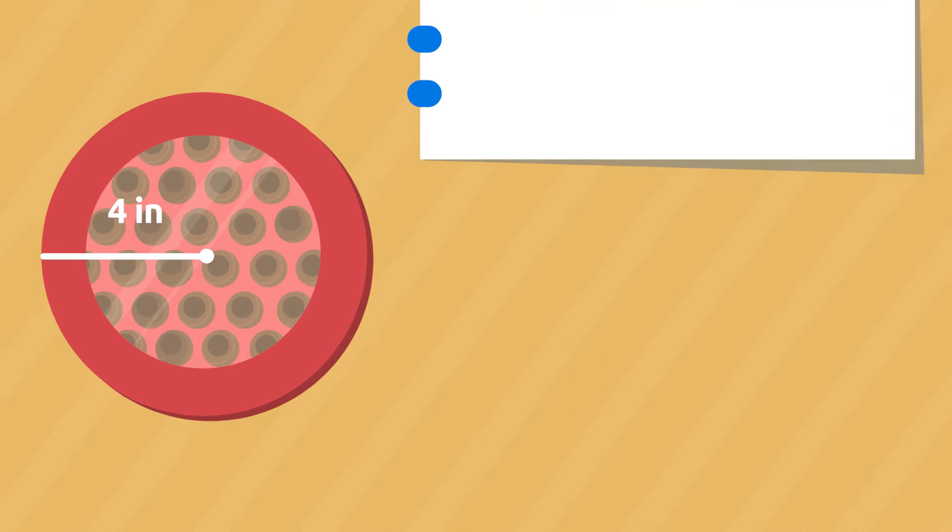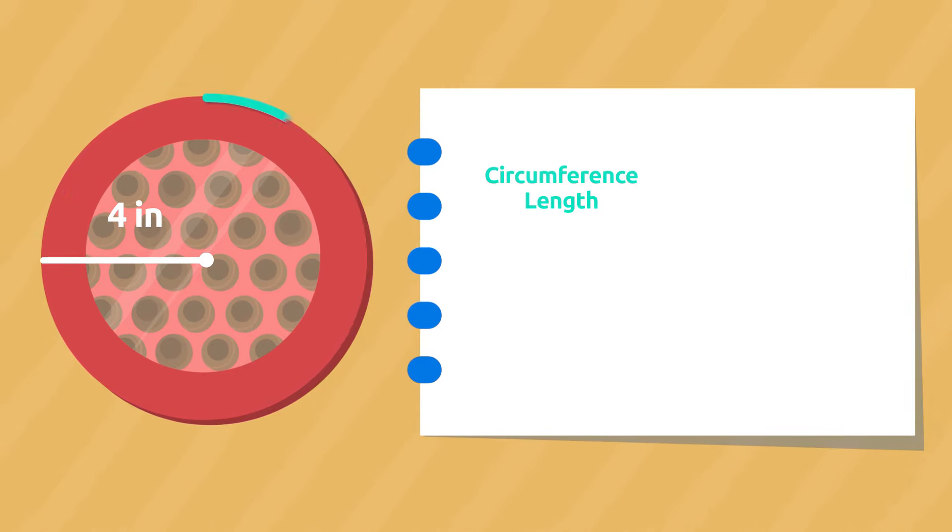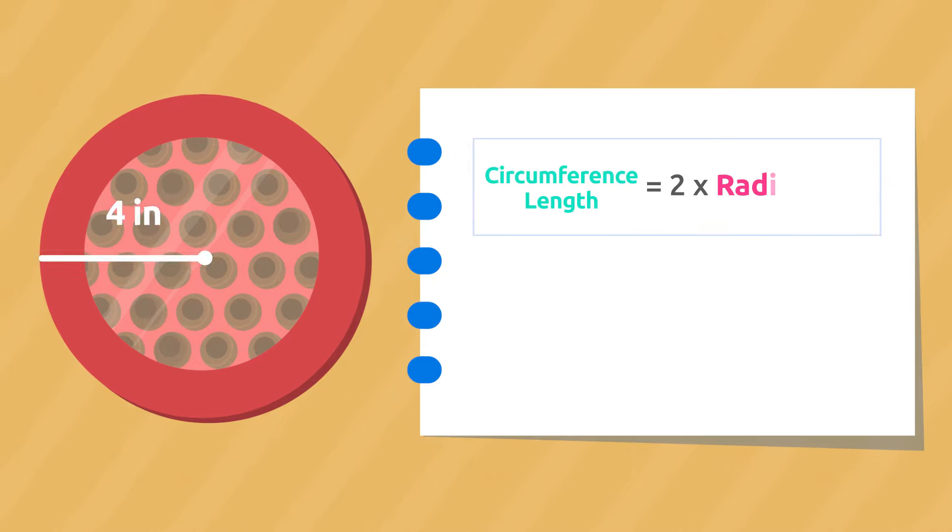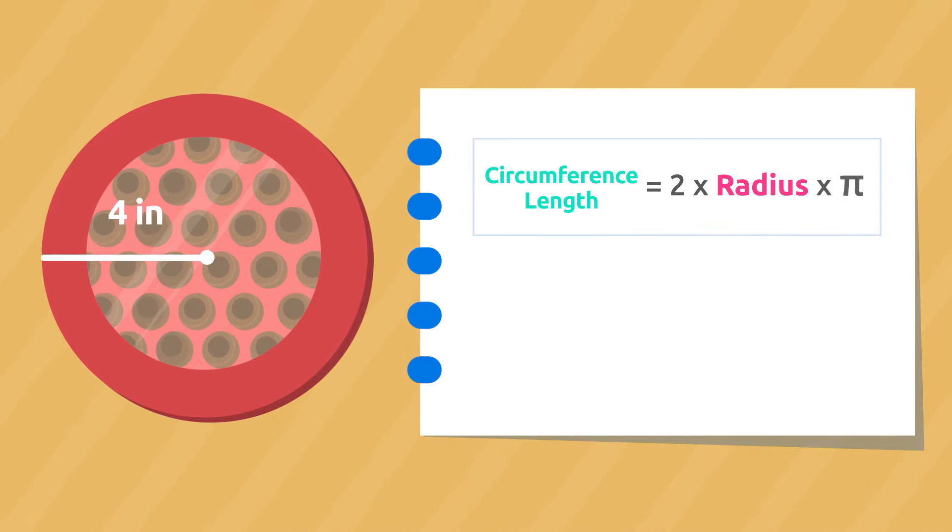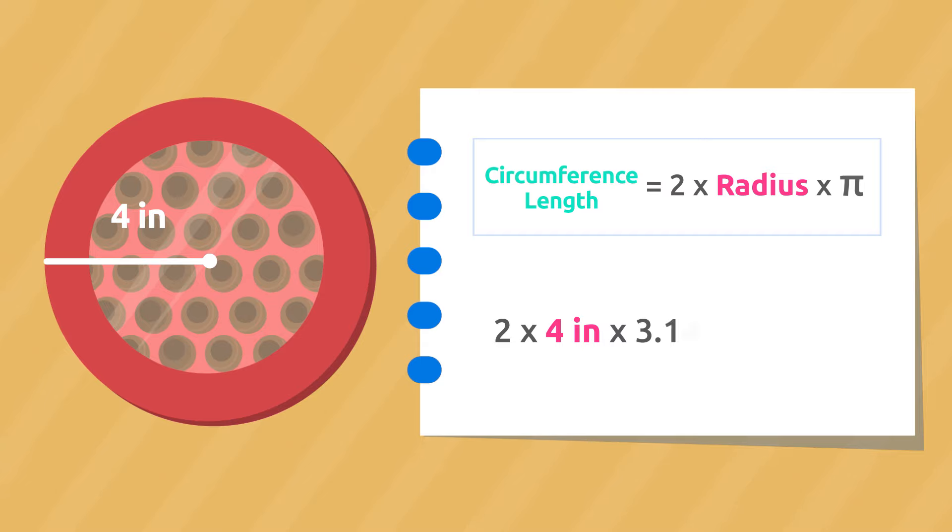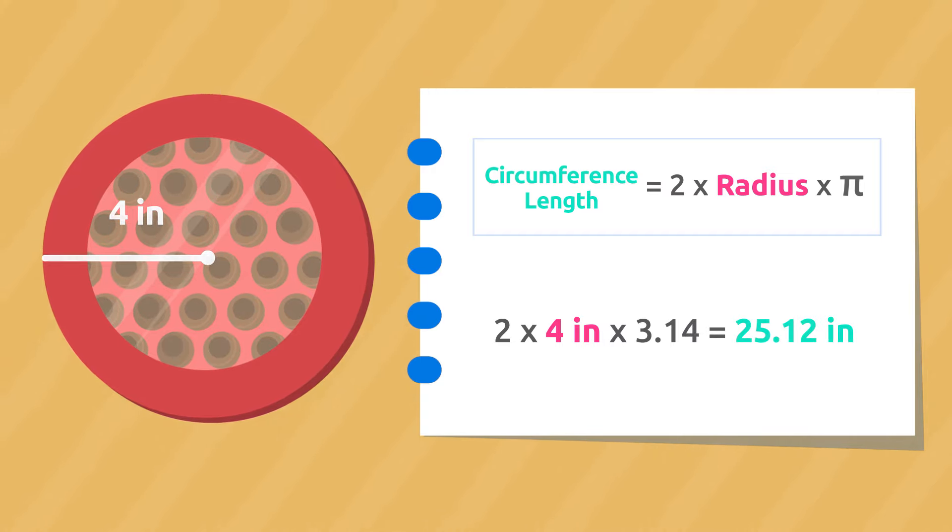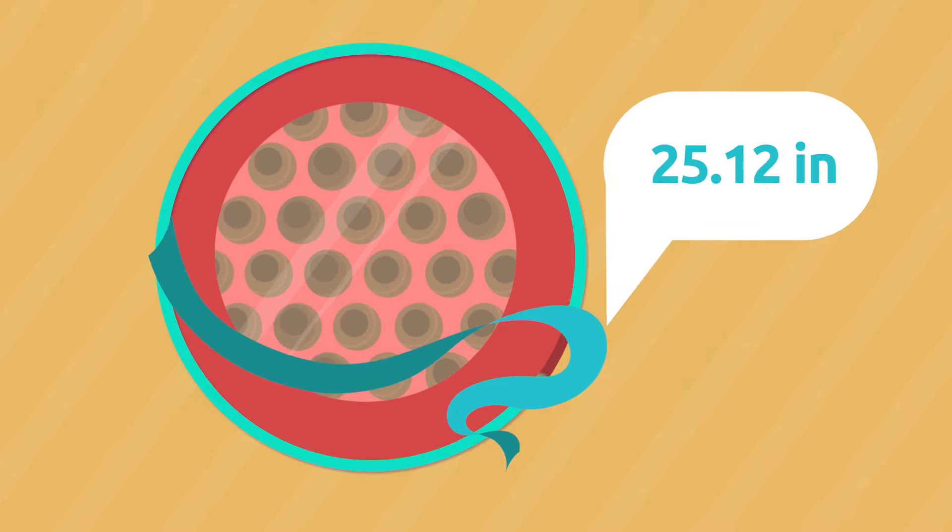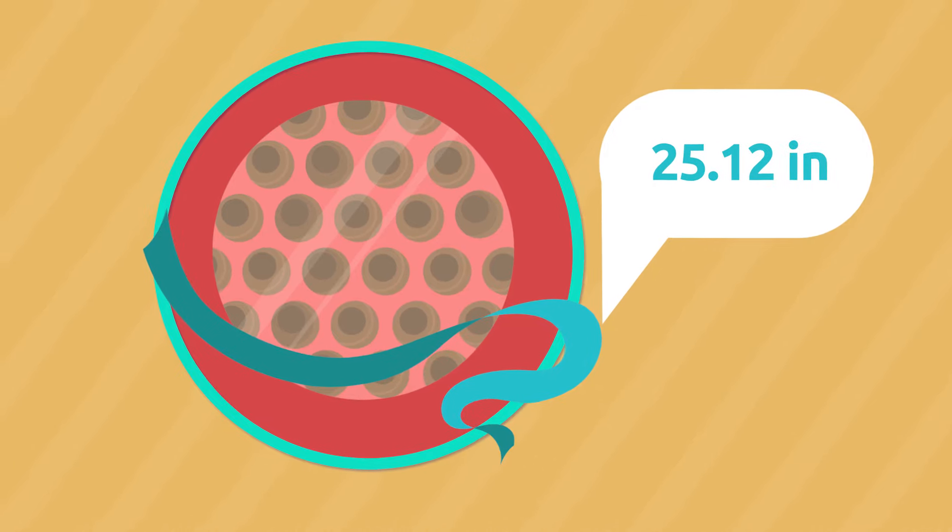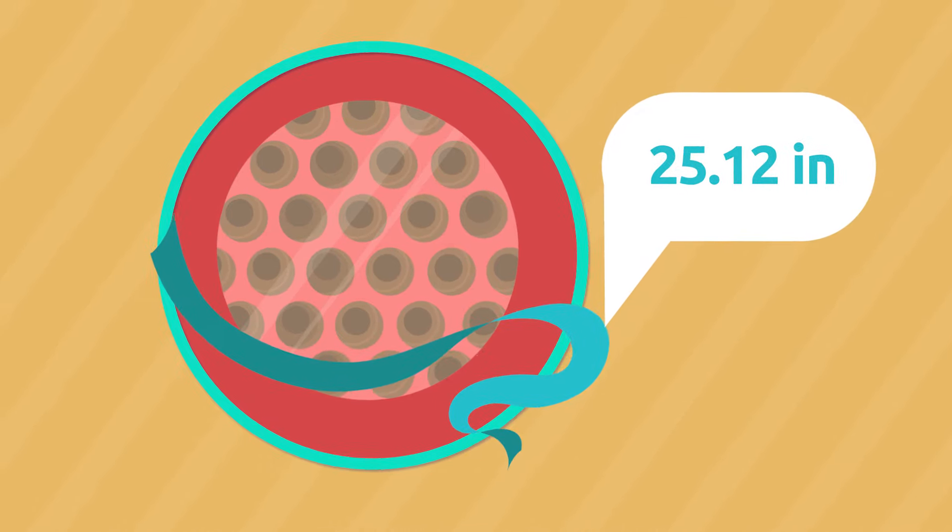To figure it out, we need to calculate the length of this circumference. We multiply the radius by 2 and by pi. Excellent! Mark needs to buy 25.12 inches of wrapping string to decorate the box of chocolates.